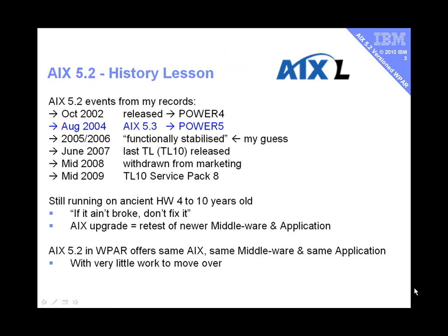A few things about the history of AIX 5.2, because we are going way back in computer terms. It actually came out in October 2002 and was aimed at the Power 4 machines available at the time. Two years later, the next release, AIX 5.3, came out targeted at the Power 5 machines, making sure it could use all the latest features. AIX 5.2 couldn't fully use a Power 5 machine — it could run, but not fully use it.